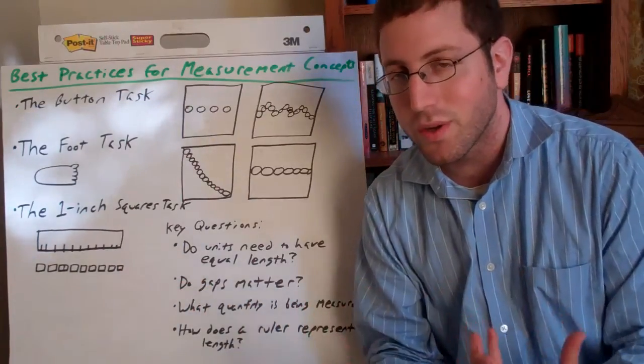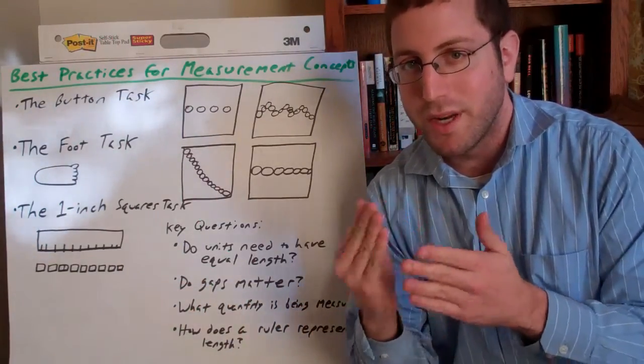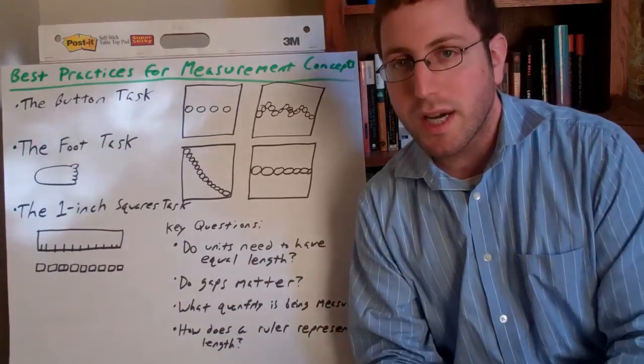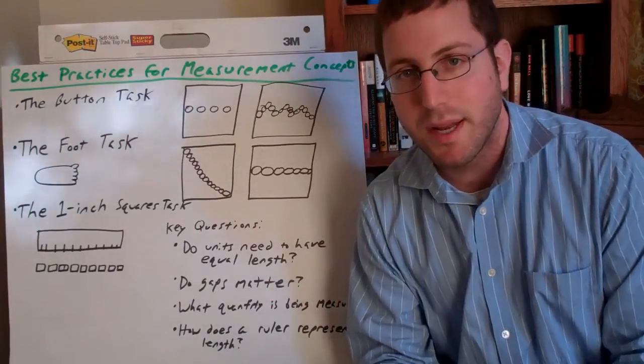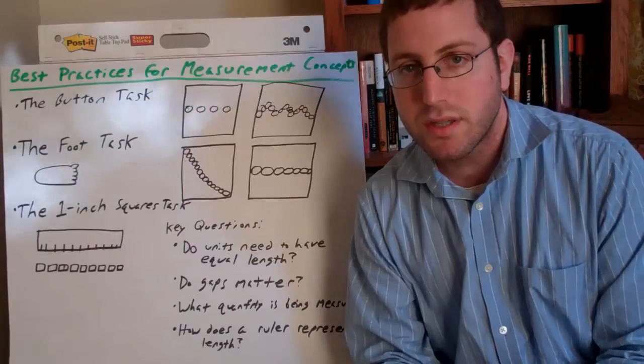Then the teacher models measuring the same object with a set of one inch squares. And of course, all a ruler is, is really a set of one inches put right next to each other. So you're going to come up with the same exact measurement.